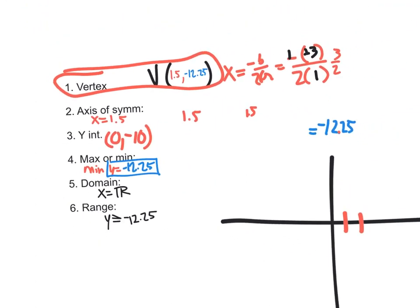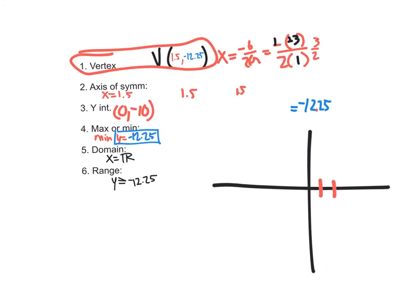I hope this helps, guys. In this case, the sketch, I only did it so you could get an idea that the domain, it really does go left and right forever. The Y values, the minimum value is down here at negative 12.25. I got that from the vertex Y value down here. And it's all above it. So that's why the range is Y is greater than or equal to negative 12.25.